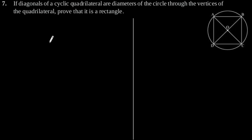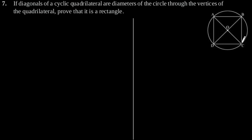Exercise 10.5, Question number 7. If diagonals of a cyclic quadrilateral are diameters of the circle through the vertices of the quadrilateral, prove that it is a rectangle. Let ABCD be a cyclic quadrilateral having diagonals BD and AC intersecting each other at point O, which is the center of the circle.